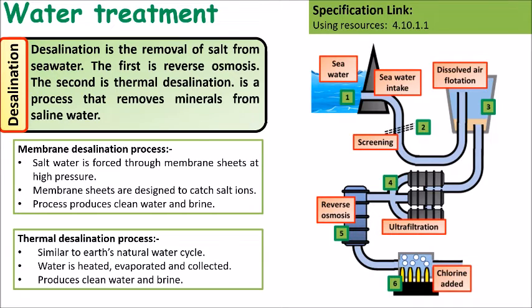In membrane desalination, salt water is forced through a series of membrane sheets at high pressure. The membrane sheets have holes that are too small for salt ions to pass through. Therefore, only water molecules are allowed to pass through and the salt gets trapped.